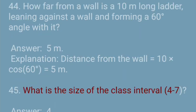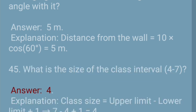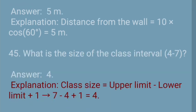Question 45: What is the size of the class interval 4 to 7? Answer: 4. Explanation: Class size = upper limit − lower limit + 1 → 7 − 4 + 1 = 4.